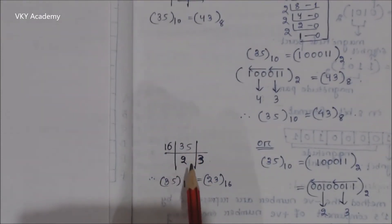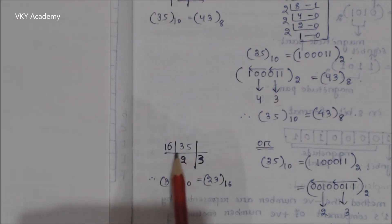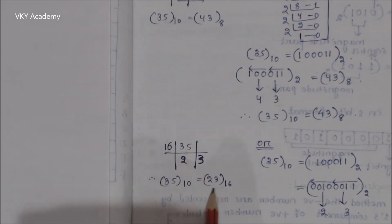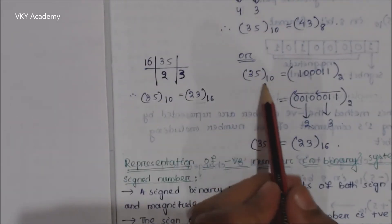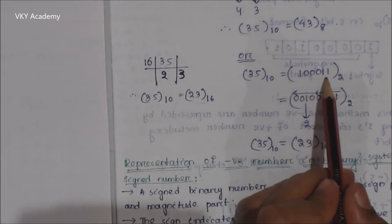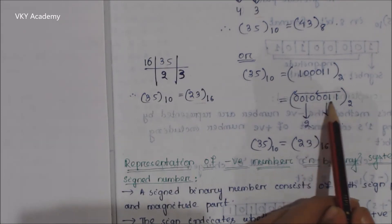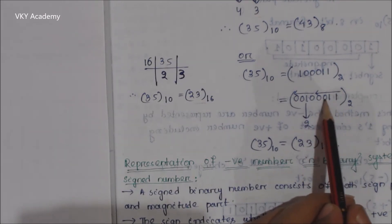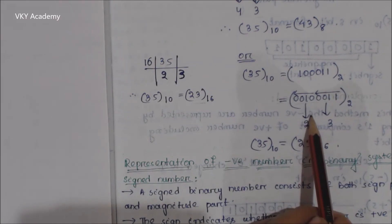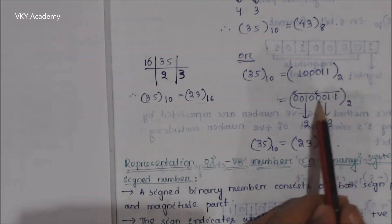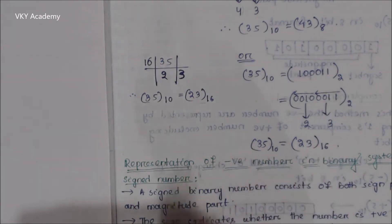Now let us see how decimal 35 can be converted to hexadecimal. To convert 35 decimal to hexadecimal, divide by 16: 16 × 2 = 32, remainder 3; quotient 2. Reading from bottom to top the hexadecimal number is 23. Alternatively, using the binary 1000011, grouping from LSB into sets of 4 bits gives 0011 (hexadecimal 3) and 0010 (hexadecimal 2), confirming the result is 23 (base 16).